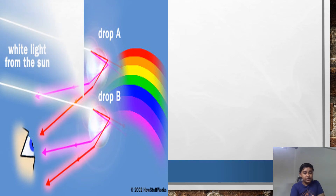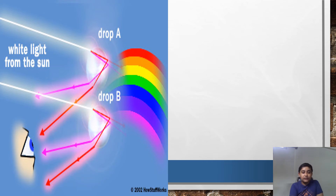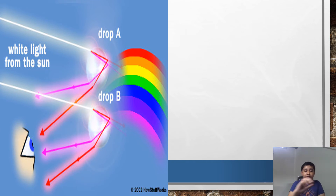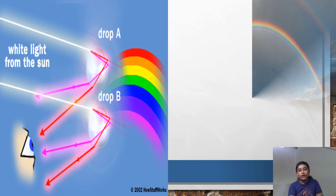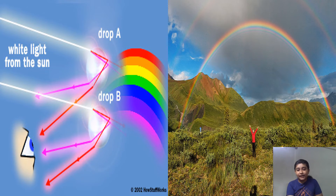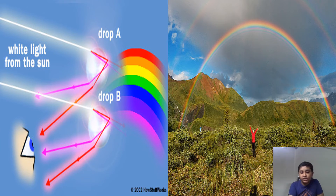I have an image here which describes the whole process that happens in our eye and in the atmosphere to form a rainbow — refraction and all the steps are included. You can pause the video and check it out. On the right side we have a real image of a rainbow.